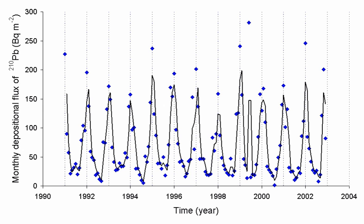Radon can be oxidized by powerful oxidizing agents such as fluorine, thus forming radon difluoride. It decomposes back to its elements at a temperature of above 250 degrees Celsius, and is reduced by water to radon gas and hydrogen fluoride; it may also be reduced back to its elements by hydrogen gas. Because of the short half-life of radon and the radioactivity of its compounds, it has not been possible to study the compound in any detail. Theoretical studies on this molecule predict that it should have a Rn-F bond distance of 2.08 Å, and that the compound is thermodynamically more stable and less volatile than its lighter counterpart xenon difluoride.